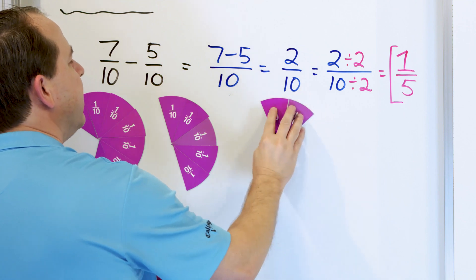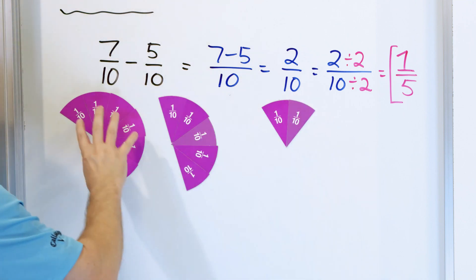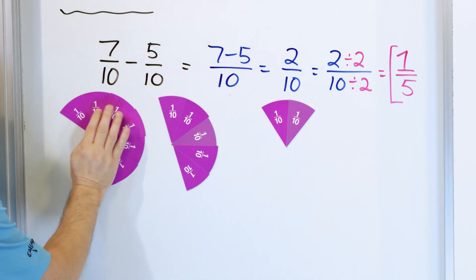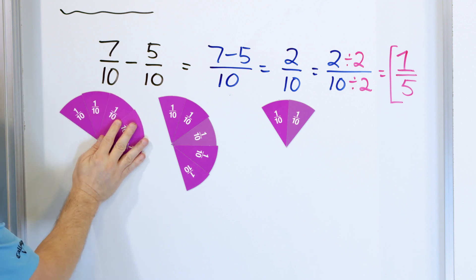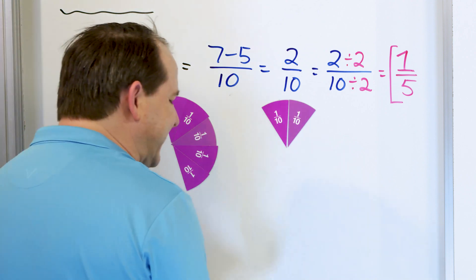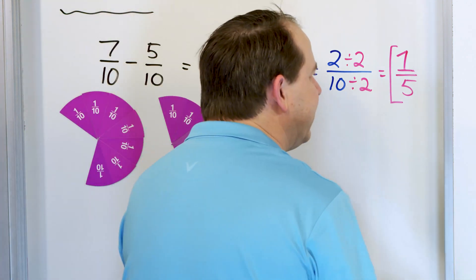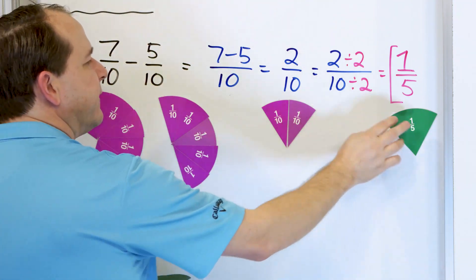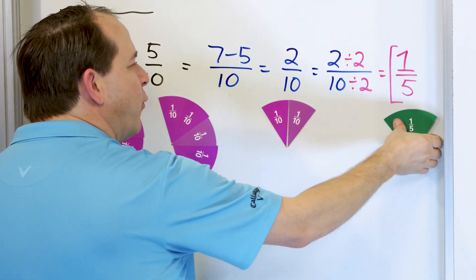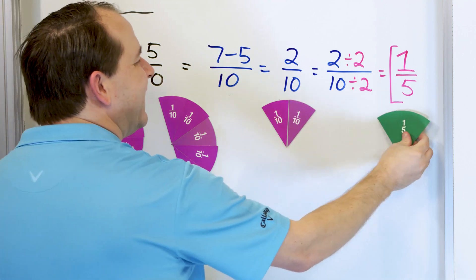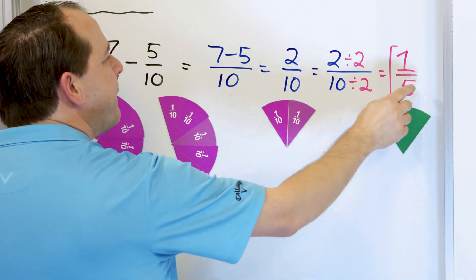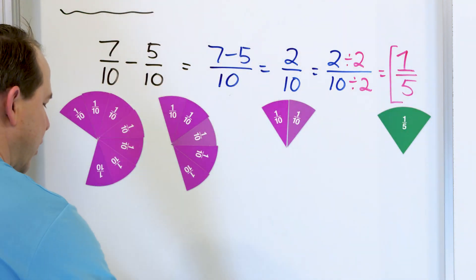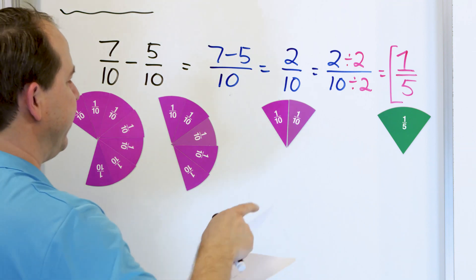The answer should be 2 tenths of a pizza left. Start with this, take this away, and I'm only going to have these two slices left. What we're saying is that that's exactly the same thing as 1 fifth. So these two things are the answer, but the 1 fifth is simpler, and it represents exactly the same amount of pizza. So we actually prefer to write the answer as 1 fifth.